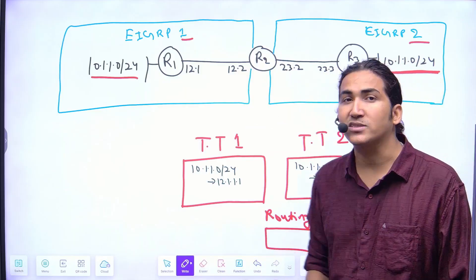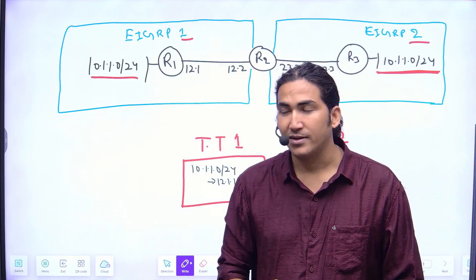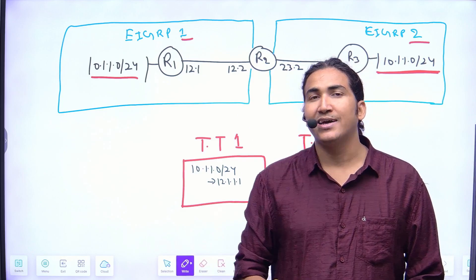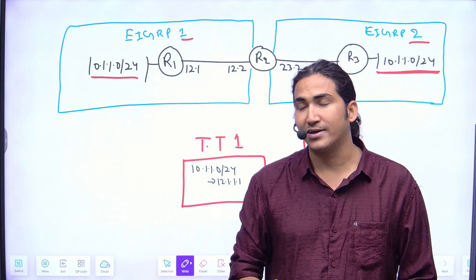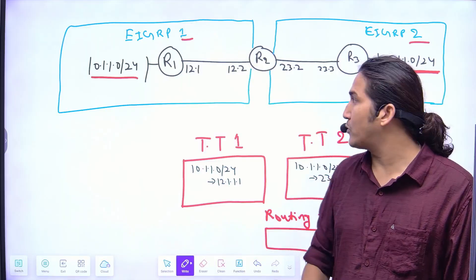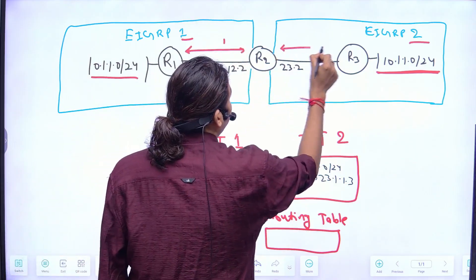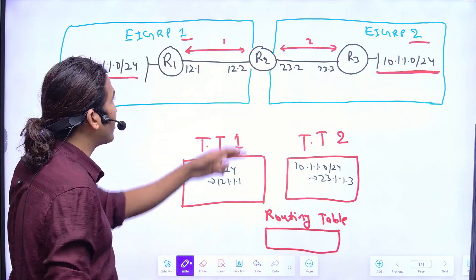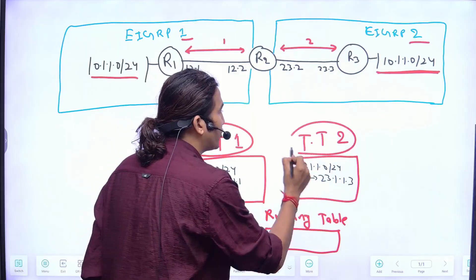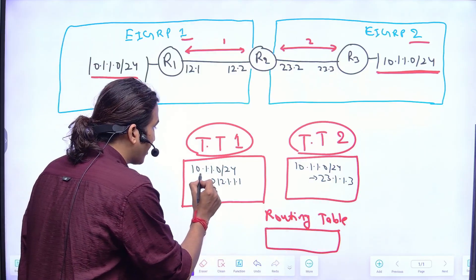That means router 2 has 2 routing sources to reach the subnet 10.1.1.0/24. Router 1 and router 2 have EIGRP neighborship in AS number 1, and router 2 and router 3 have EIGRP neighborship in AS number 2. That is why router 2 will be maintaining 2 topology tables — topology table 1 and topology table 2.